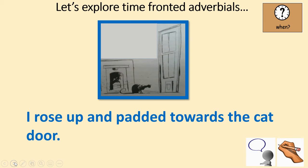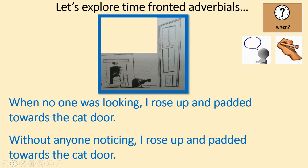Another sentence: 'I rose up and padded towards the cat door.' But when did I do that? My two sentences are: 'When no one was looking, I rose up and padded towards the cat door.' And: 'Without anyone noticing, I rose up and padded towards the front door.' The time-fronted adverbial is the first — 'when no one was looking' tells us when it happened.